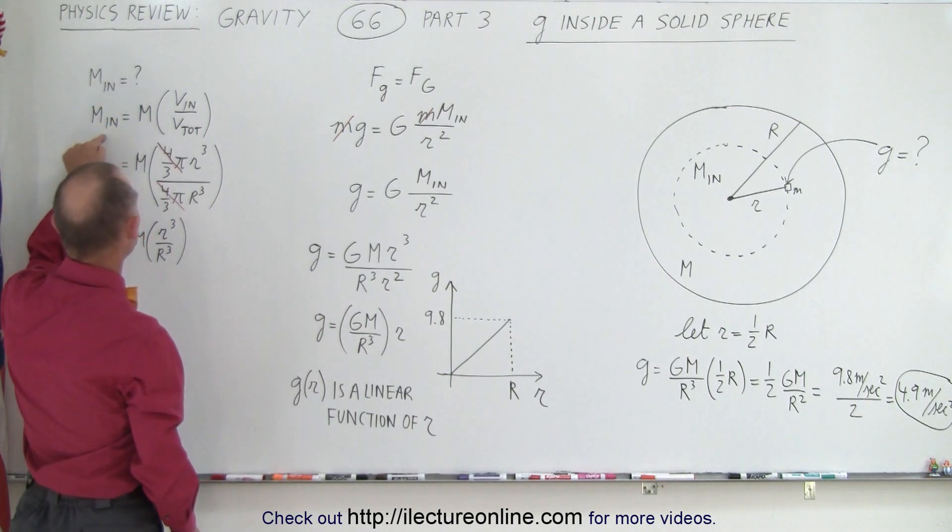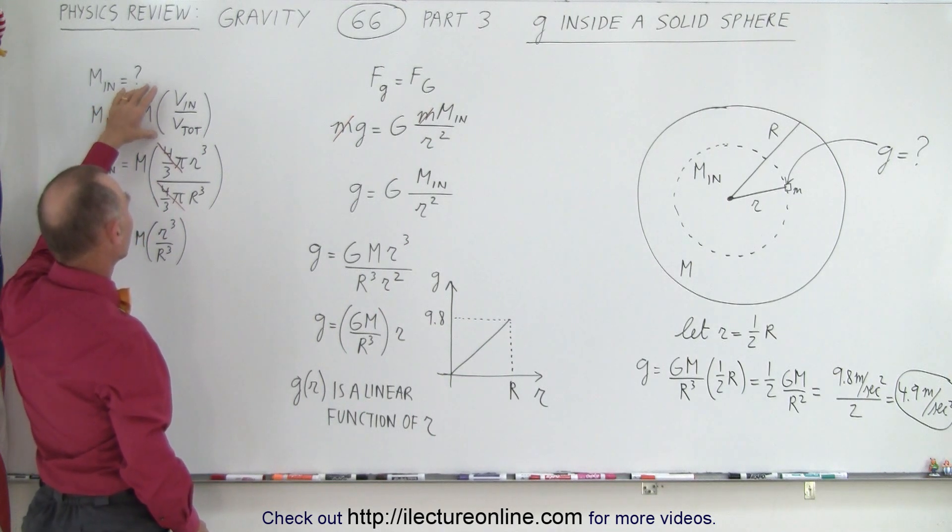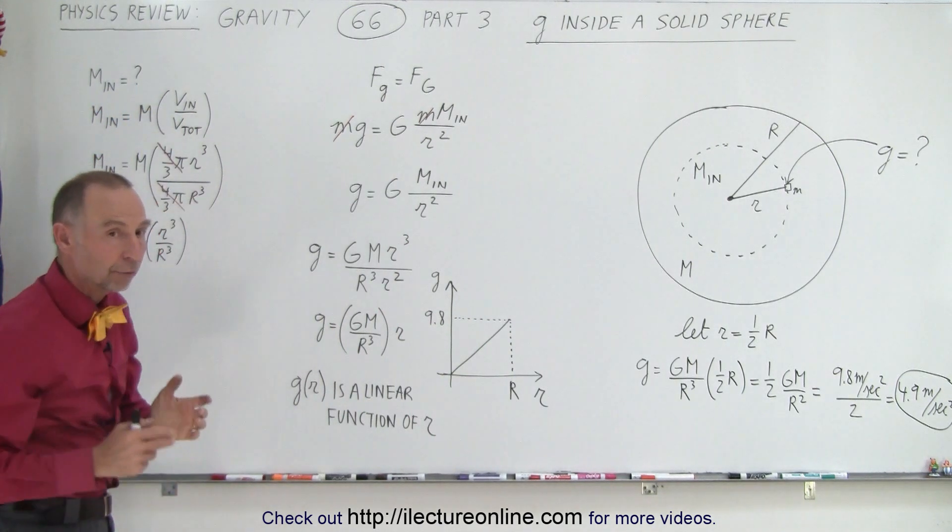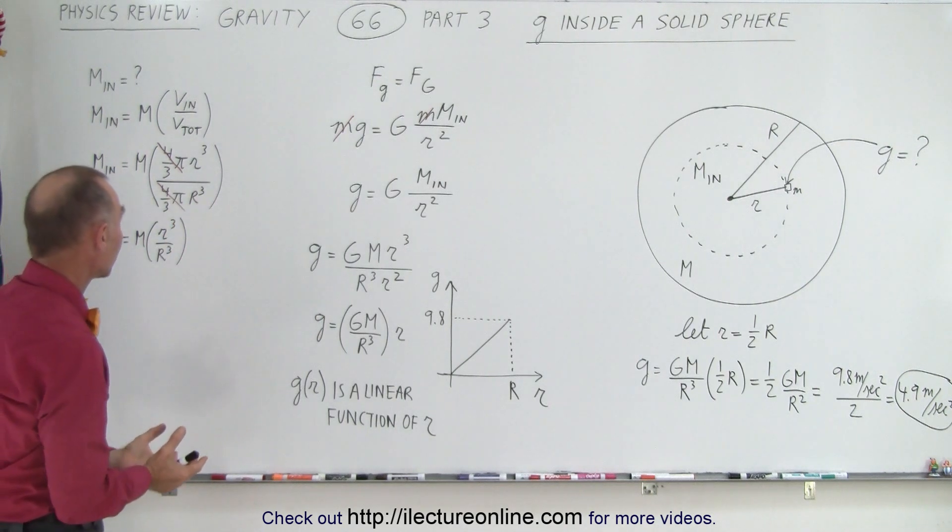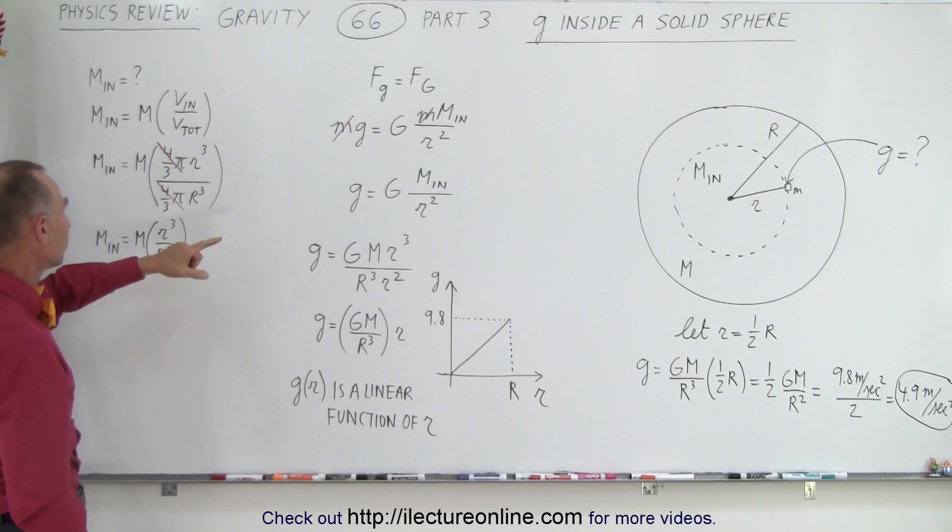Well, we say the mass inside the sphere is equal to the total mass of the object divided by the ratio of the two volumes, the volumes inside little r and the volume of the whole object. Of course, the volume is four-thirds pi r cubed, and so the four-thirds pi cancels out.